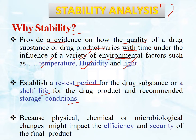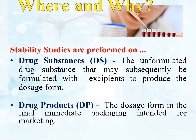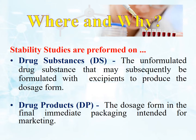Physical, chemical, and microbiological changes might impact the efficiency and security of the product, and have a great impact on the final product. Now the question is where and why we do stability study. We perform stability study on drug substance and drug product. Drug substance means all raw materials and excipients used for preparing any dosage form.